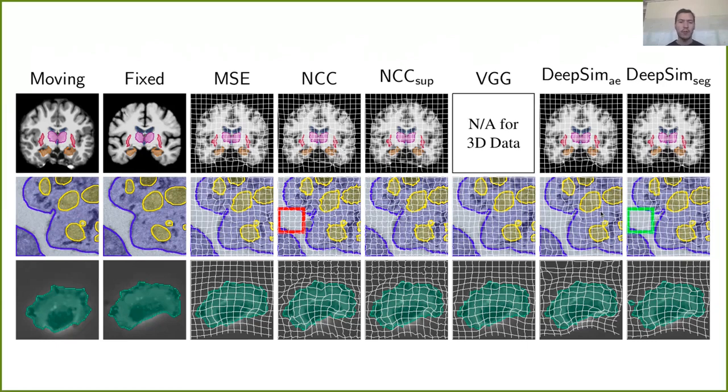We compare our methods to multiple baselines. In the columns here, we first have the moving and fixed image. Then we have the mean squared error. We have normalized cross-correlation. We have normalized cross-correlation with a supervised component. We have the VGG network for image classification. And then we have our DeepSim similarity metric, trained with both an unsupervised autoencoder and the supervised segmentation network as a feature descriptor. And we use white grid lines here to visualize the transformation.